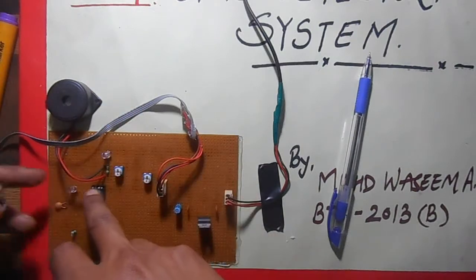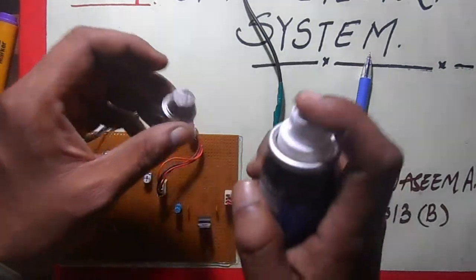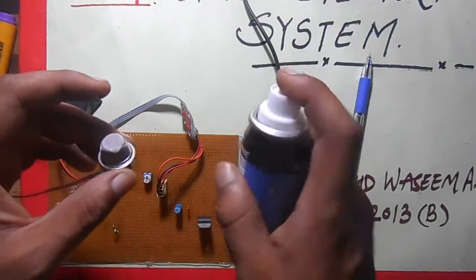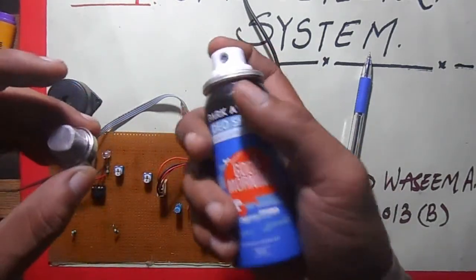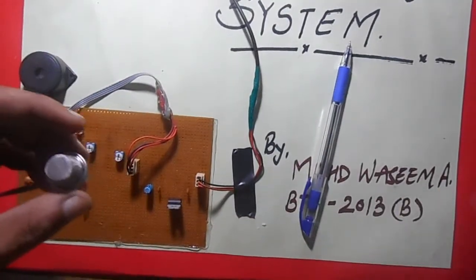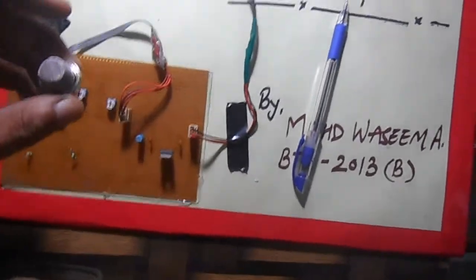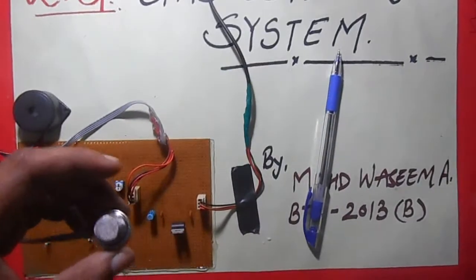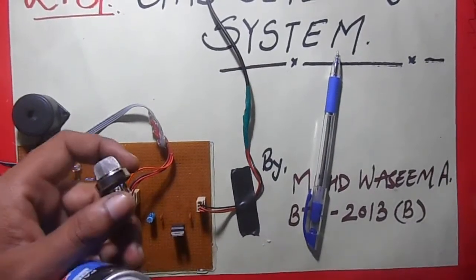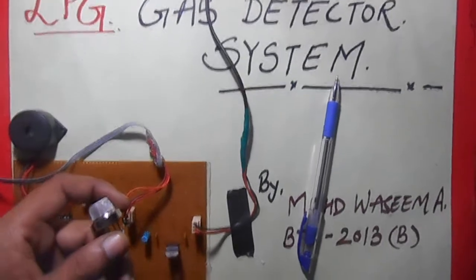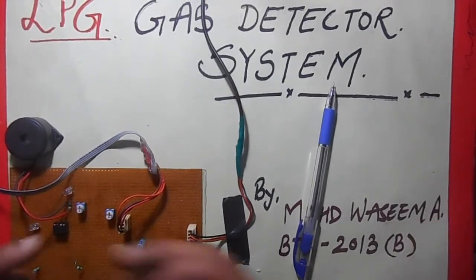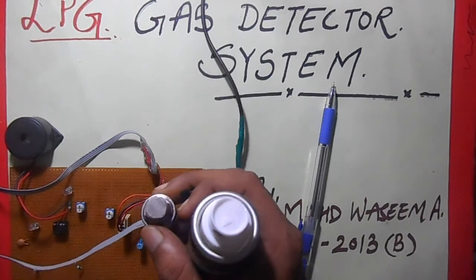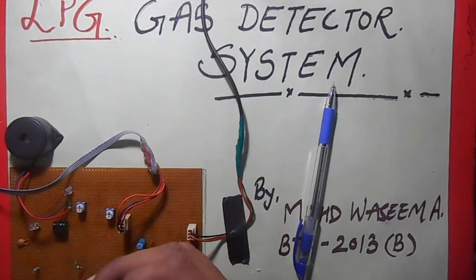And comparator IC, according to the circuit, is providing high pulse whenever there is concentration, when the concentration is high of combustible gas like butane or propane, the LPG gas content which is present. So here we are going to start our circuit. So I am switching on the power supply. The power supply is switched on.